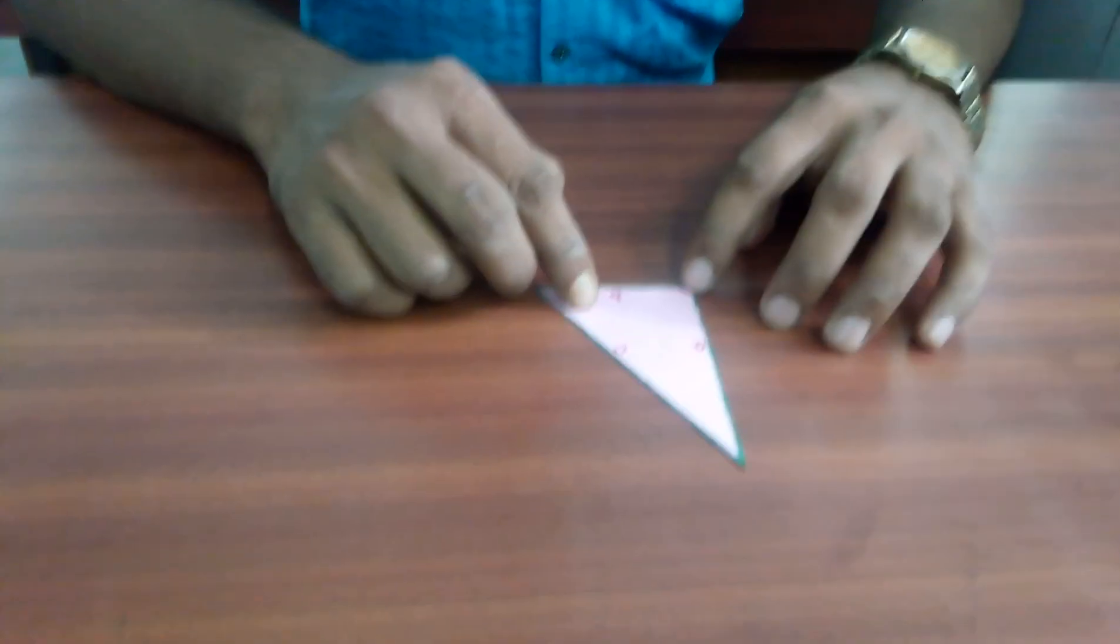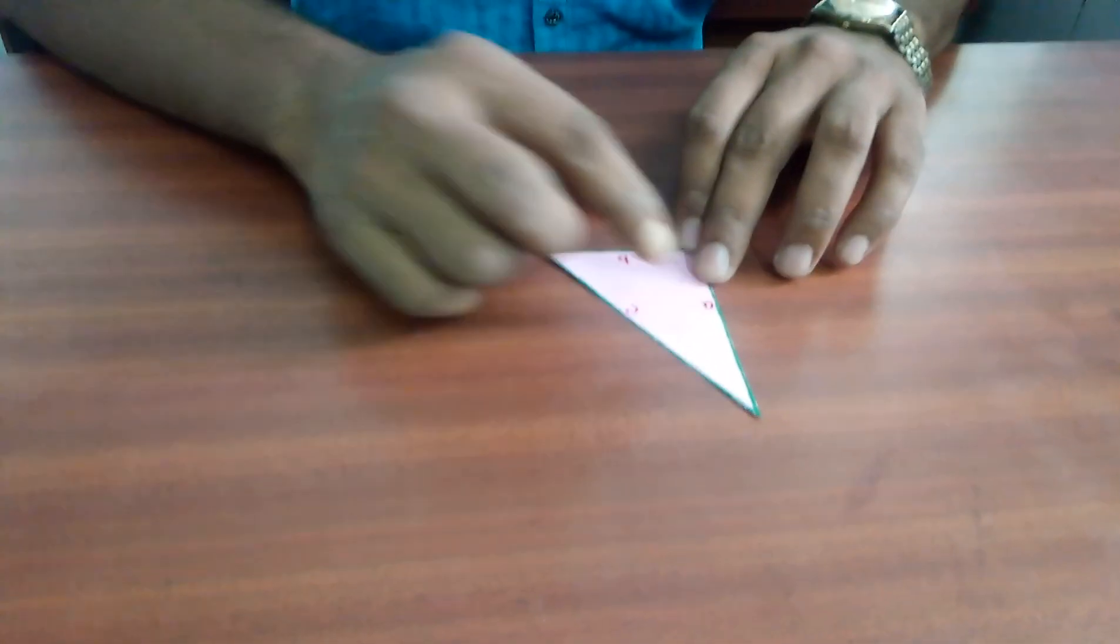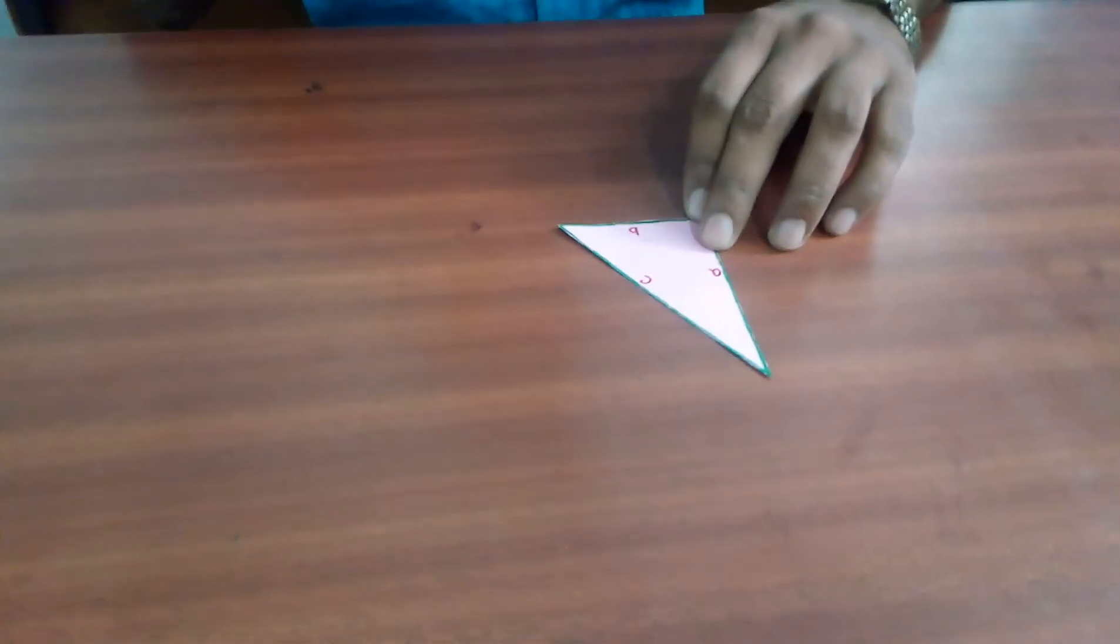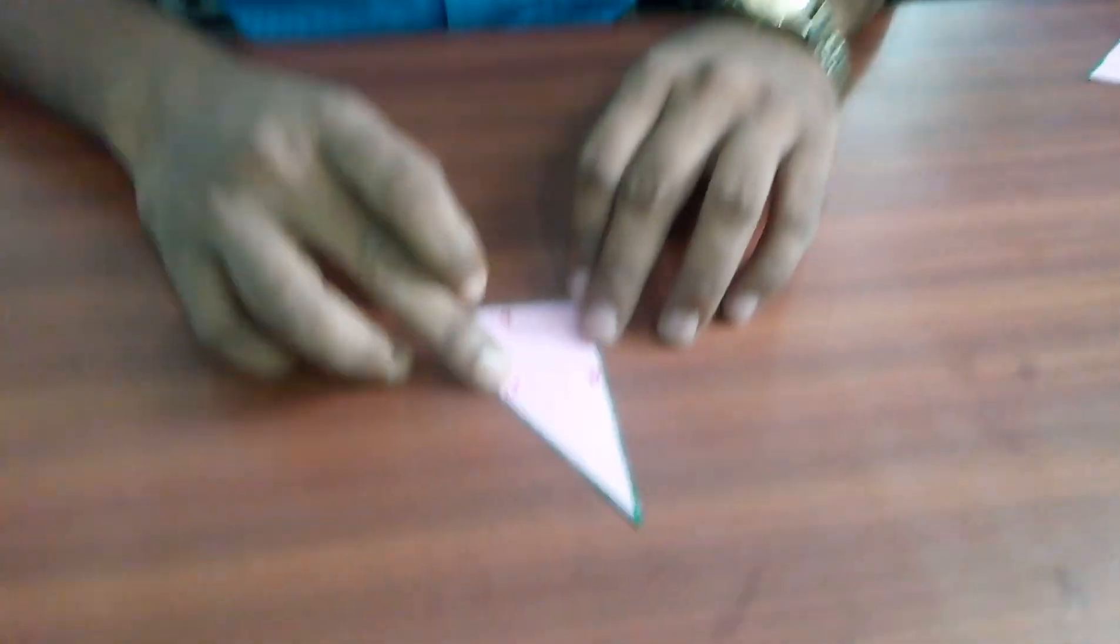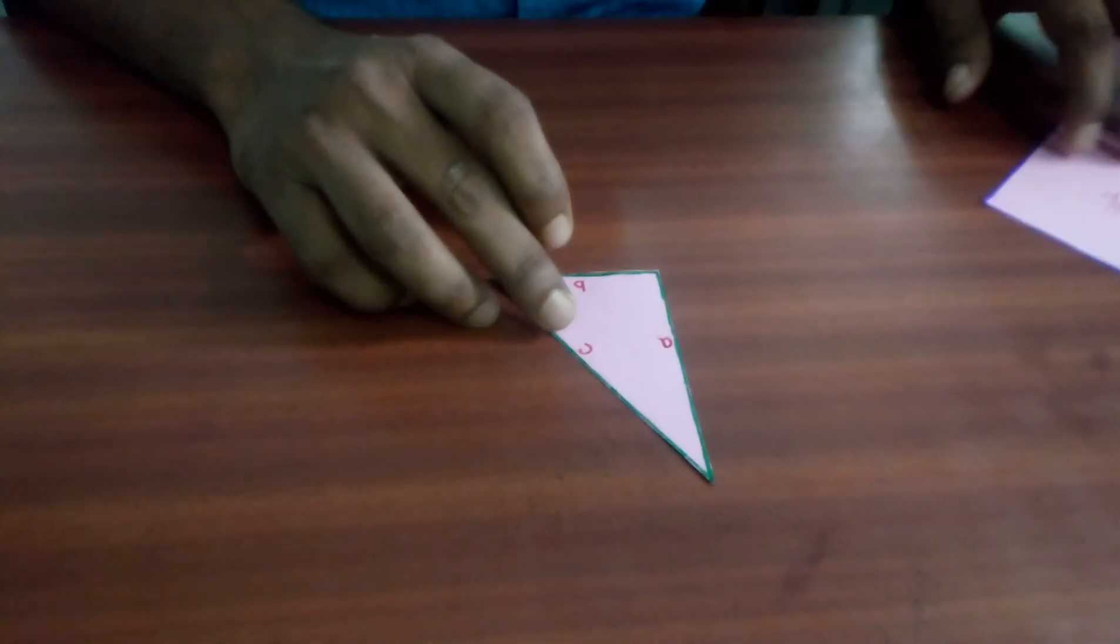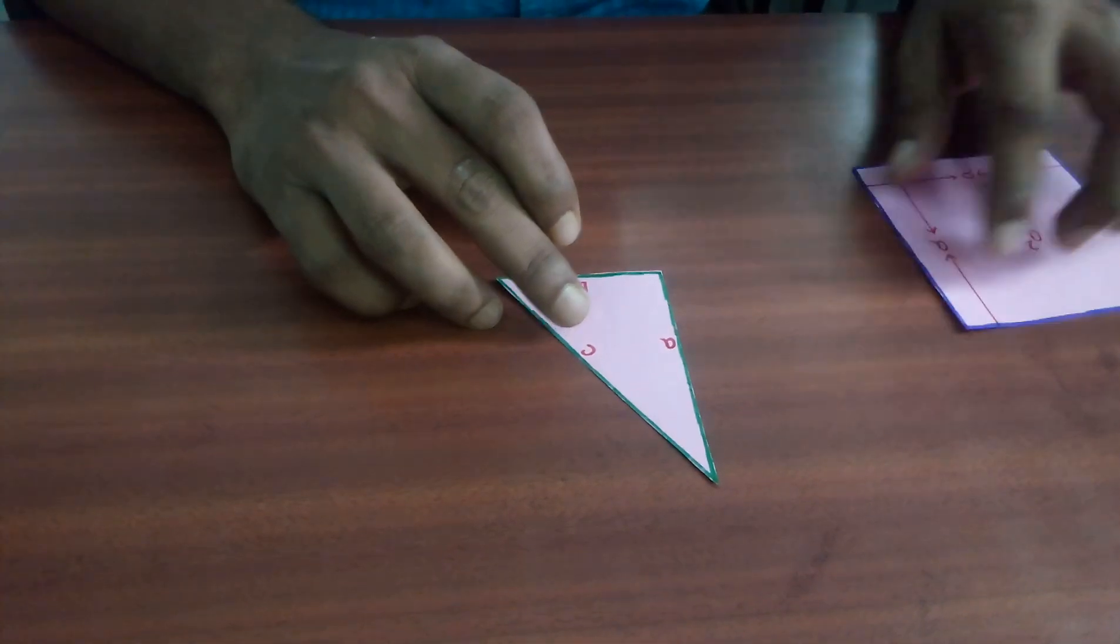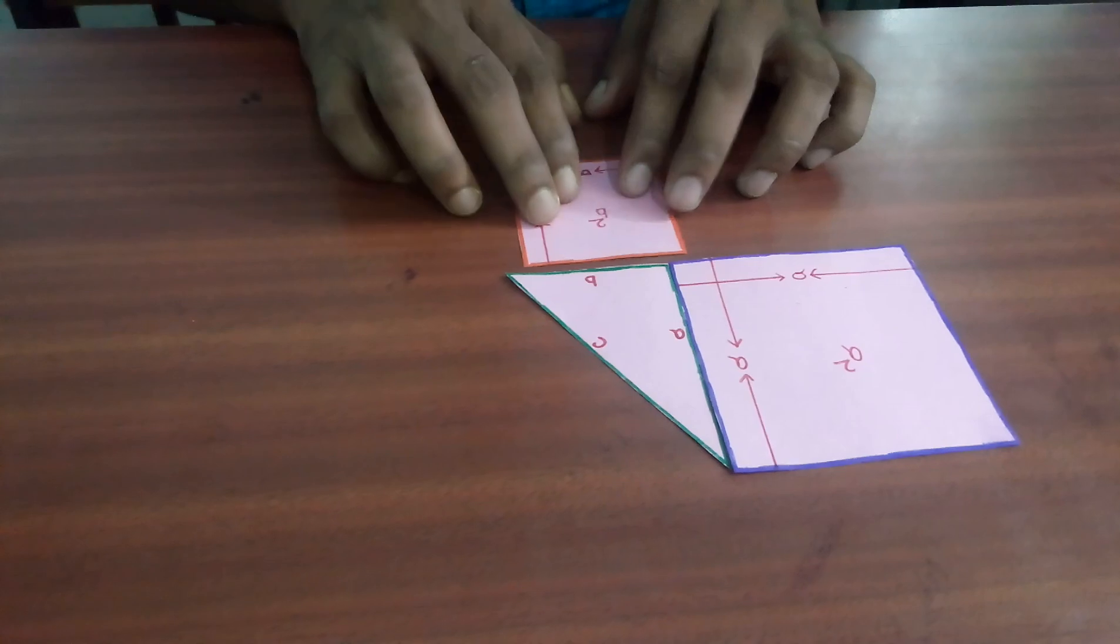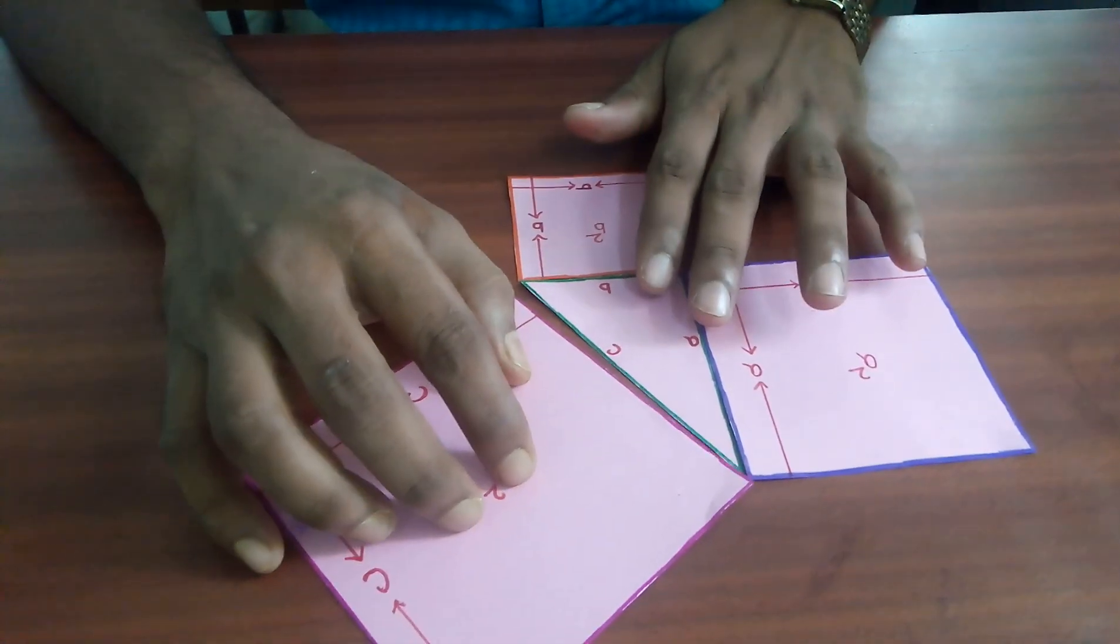So for that we need a right angle triangle with the side adjacent to right angle are A units and B units and the side opposite to right angle is C unit. Now, taking each side we will draw three squares. One is of side A unit, one is of side B unit and one is of side C unit.